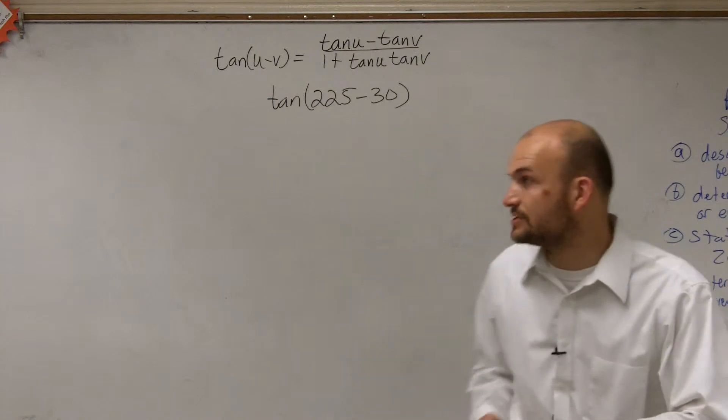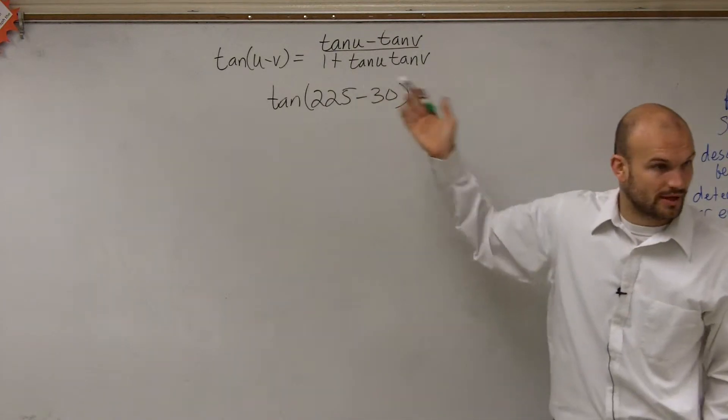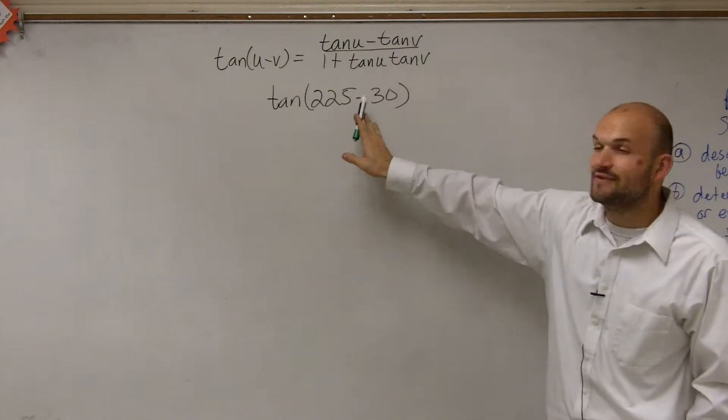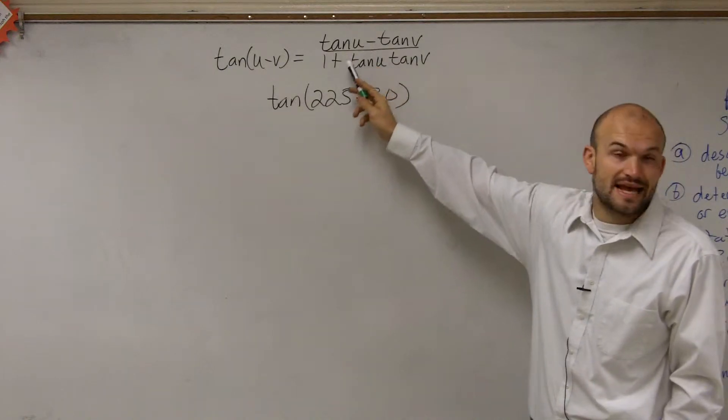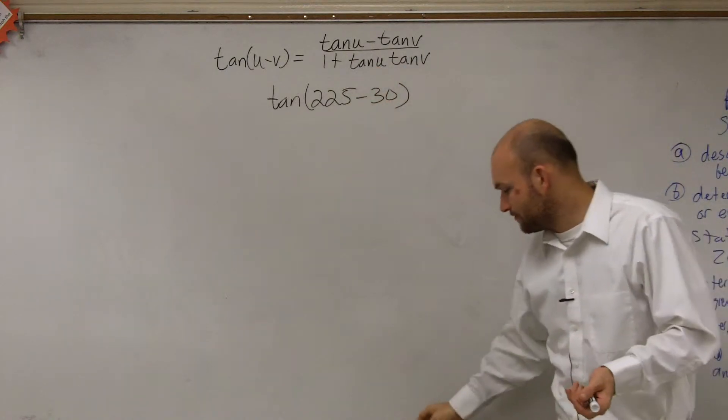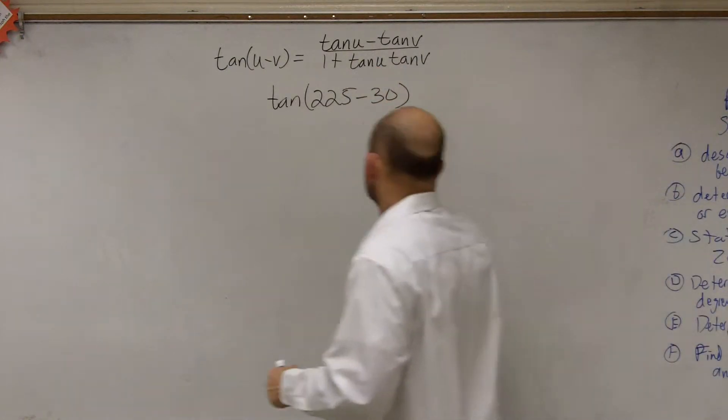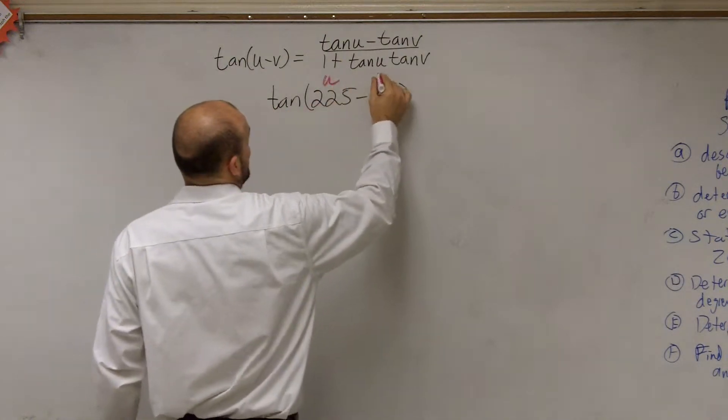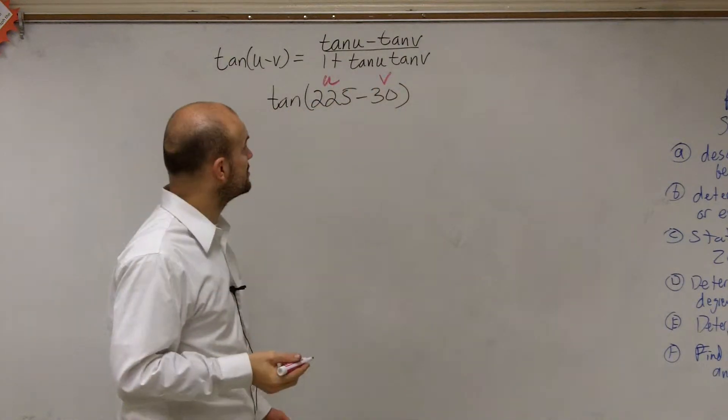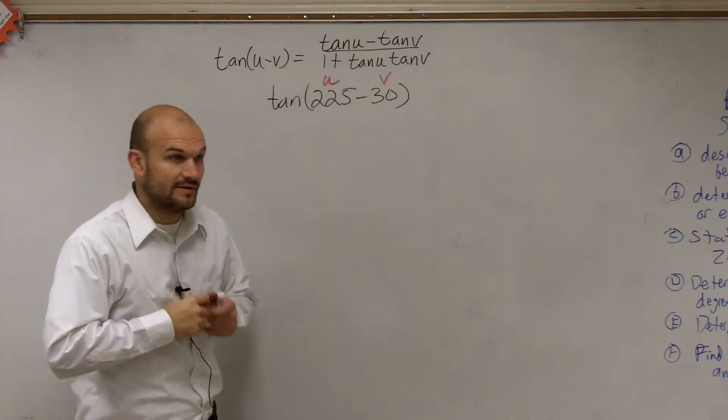The main important thing is we need to use the formula written up here. We just need to make sure we can evaluate what exactly tan u is and tan v. The first thing I always like to do is label what our u and our v are. Let's say 225 degrees is going to be our u, and 30 degrees is going to be our v.